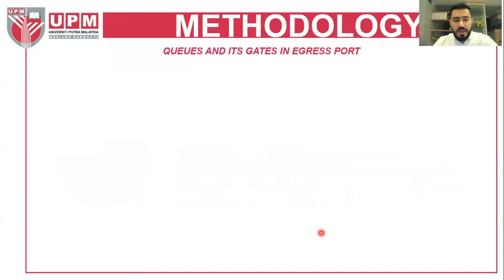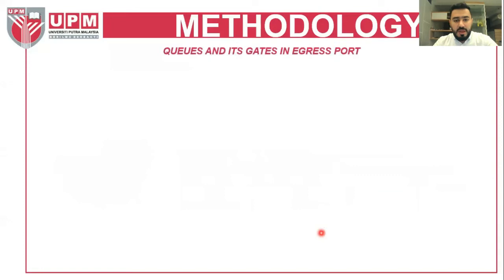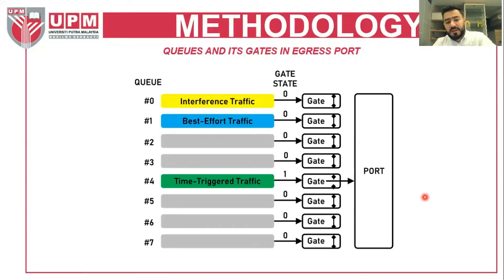The queue and gate at the egress port consist of eight queues numbered zero to seven. Queue four is for time-triggered traffic, queue one for best-effort, and queue zero for interference traffic. In the current state shown, the time-triggered traffic gate is open while the others are closed.